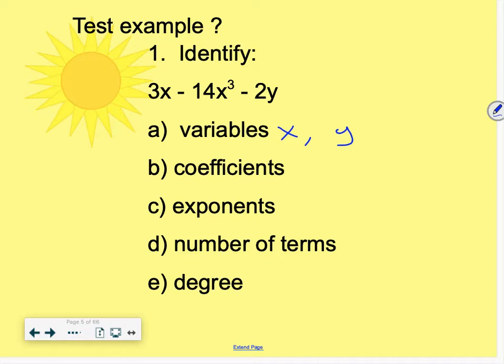The coefficients are the numbers in front of the variables. And one thing to remember is if you have subtraction, you can change subtraction to plus the opposite, or plus a negative. So the coefficients are technically the 3, the negative 14, and the negative 2. It would be wrong if you wrote negative 3x, for example.